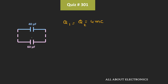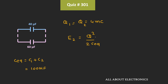Now let's find the energy of the overall system. After the connection of the second capacitor, the energy of the entire system is E2, which is given as Q² divided by 2 times C equivalent. This C equivalent is the equivalent capacitance of the parallel connection, equal to C1 plus C2, which is 100uF. So E2 equals (4mC)² divided by 2 times 100uF, which equals 0.08 J.